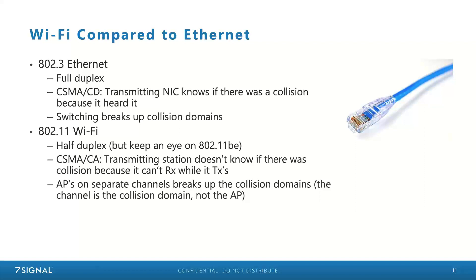We rarely think about collision domains in Ethernet anymore because we use switching. Back in the 90s with hubs, collision domains were a real concern, but switching solved that. In Wi-Fi, the collision domain is actually the channel we're operating on — not the access point. You could have more than one access point on the same channel sharing that resource. All the access points and clients on that channel share a collision domain, as long as they're within range of each other.